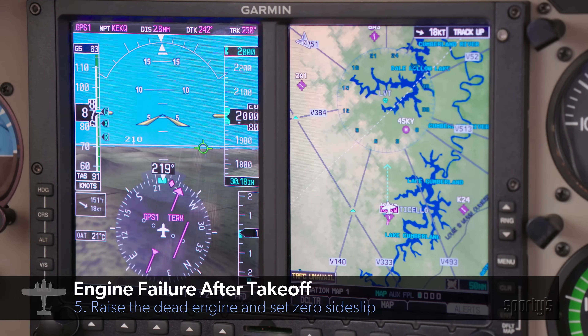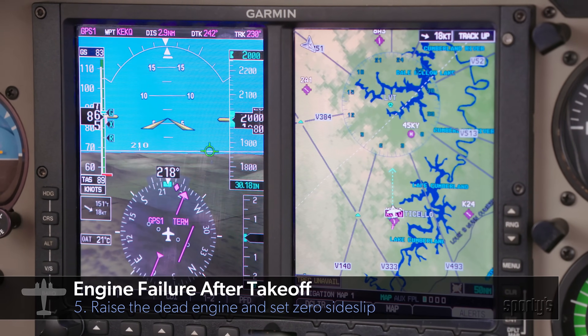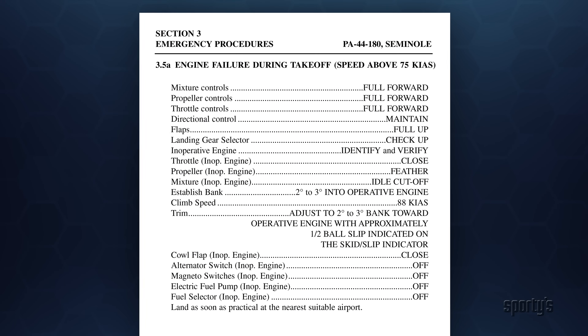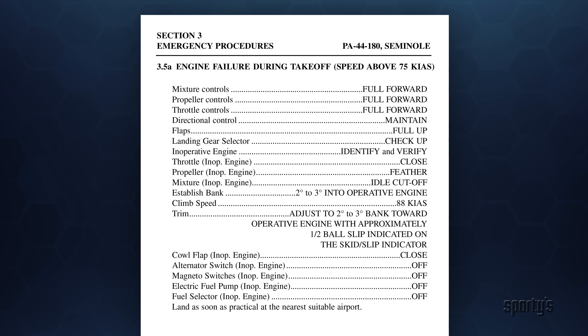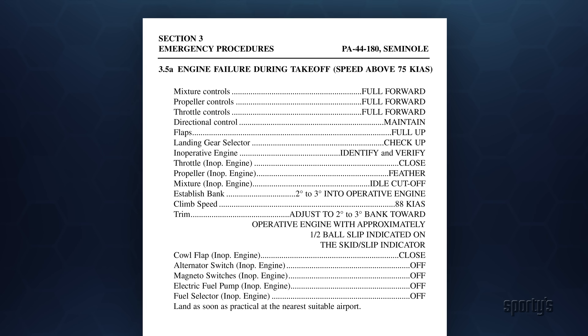Raise the dead engine slightly and set zero sideslip. If performance and altitude permit, review the emergency checklist to ensure completion of appropriate items. The procedure for the airplane should become a rhythmic mantra: directional control, pitch for blue line, mixtures full, props full, throttles full, flaps up, gear up, identify, verify, feather, set zero sideslip. Learn the mantra well, and it will stick with you when you really need it.